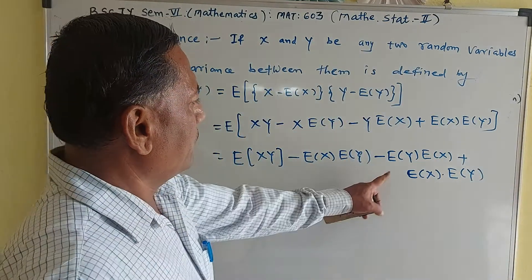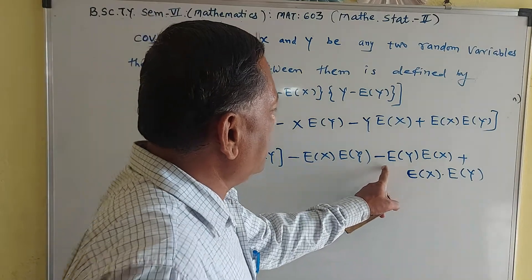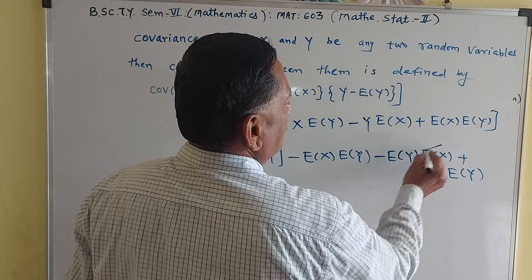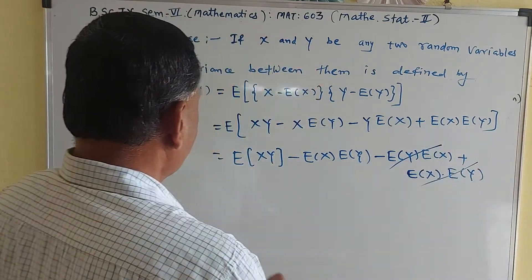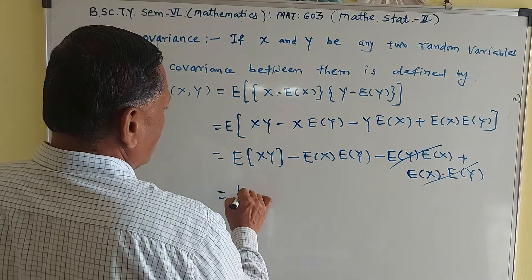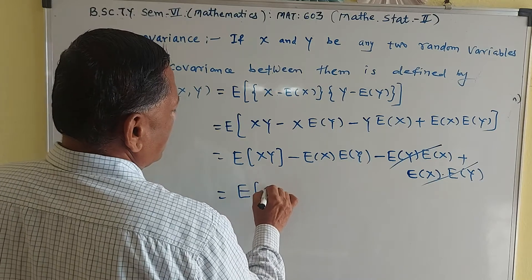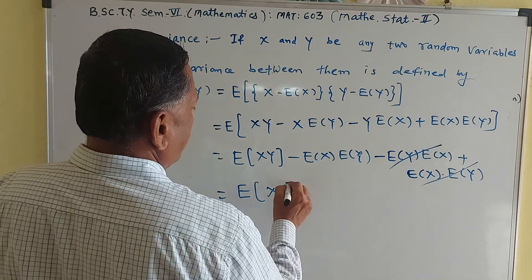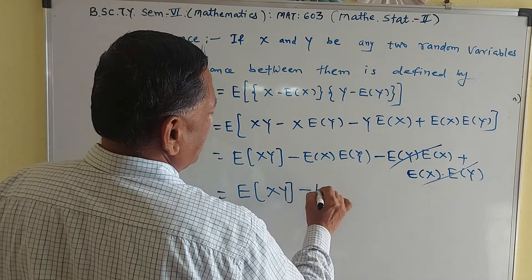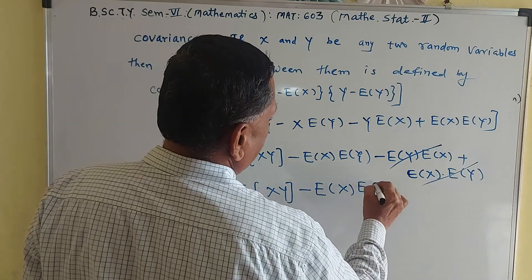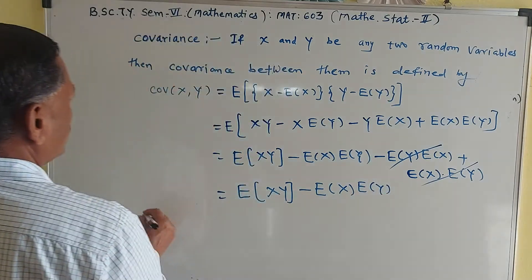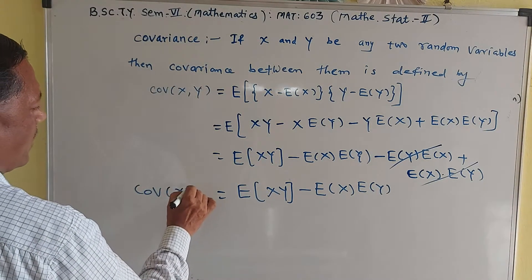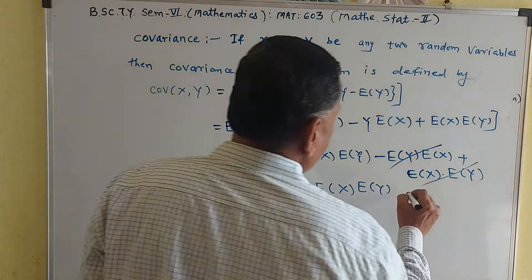Here, minus expectation of X times E[Y] plus E[X] times E[Y] — these terms cancel. So the result is: Cov(X,Y) = E[XY] minus E[X] times E[Y]. This is the simplified formula for covariance of X and Y. This is result number one.